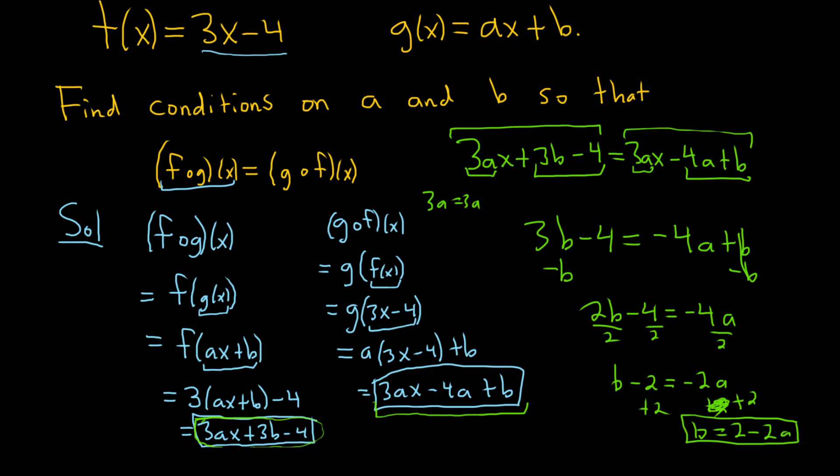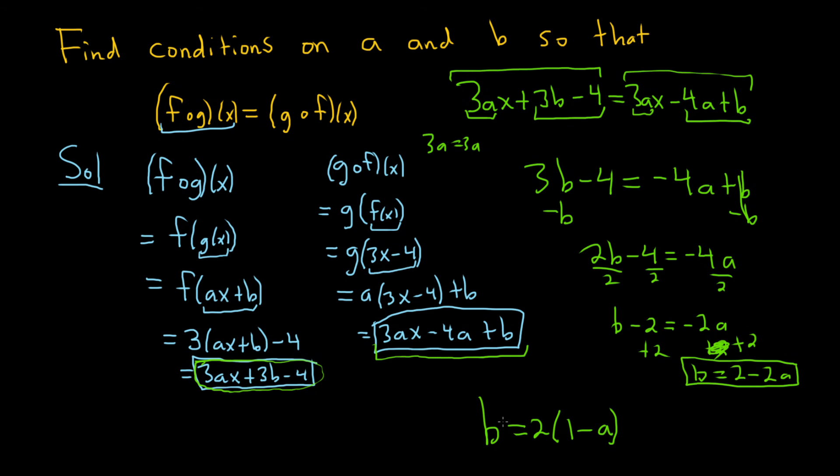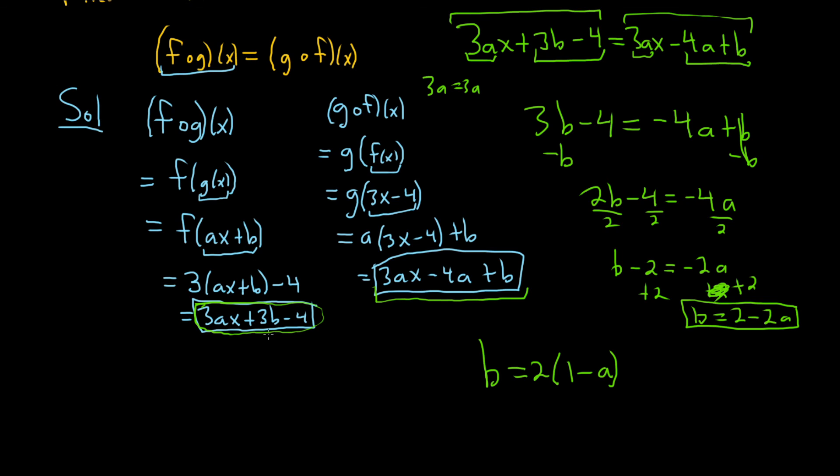b is equal to 2 minus 2a. You could probably rewrite it in another way. You could say like, you know, b is equal to 2 times 1 minus a, et cetera. And I don't think there's anything else we can use in the problem to make it better, right? So we've worked out a and b. And so those are the conditions.